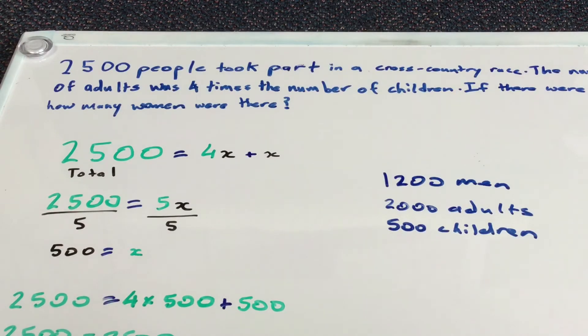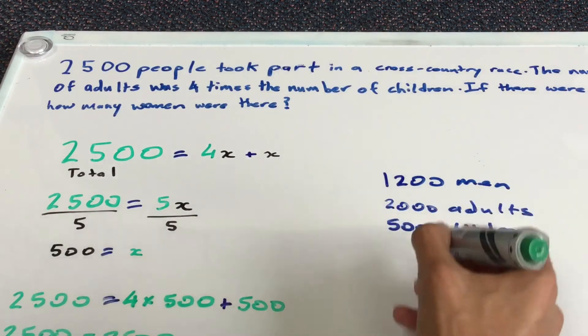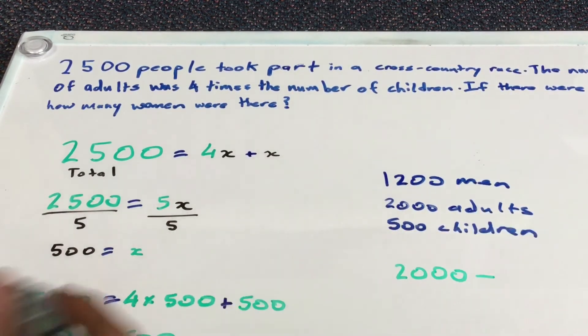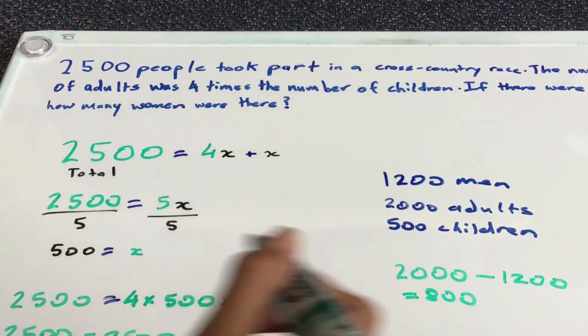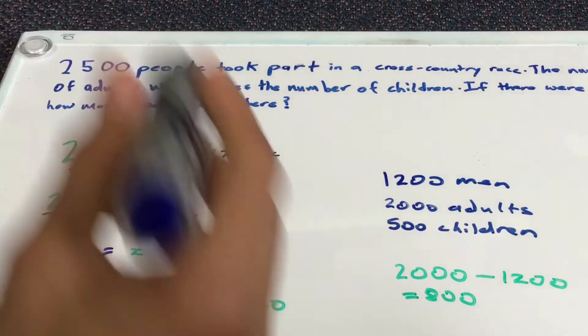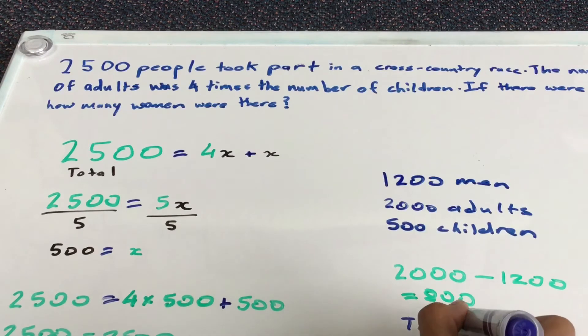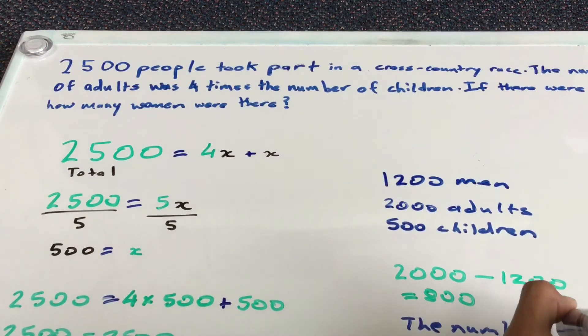So what does our question tell us? We need to find how many women were there. So that's quite easy. We know the total number of adults is 2,000, and we know 1,200 of the adults were men. So we can just go 2,000 minus 1,200, and that means the number of women. So the number of women was 800.